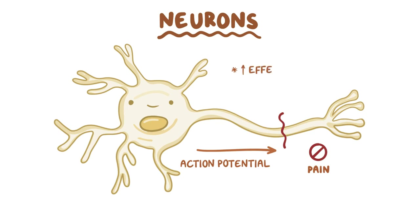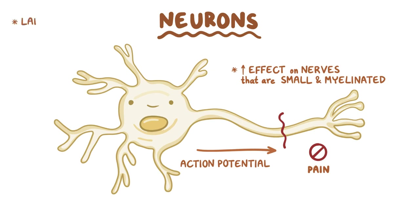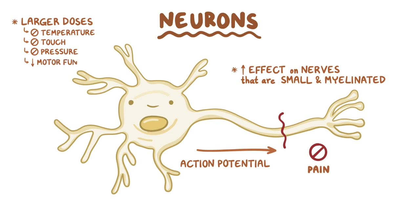Local anesthetics have a larger effect on nerves that are small and myelinated, which is good since nerve fibers carrying pain sensations are usually small. At larger doses, they can also block conduction of temperature, then touch, then pressure, and finally there is a loss of motor function entirely.